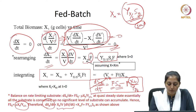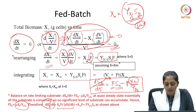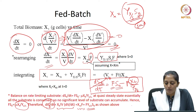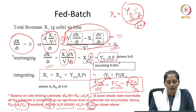At quasi-steady state all the substrate is getting consumed, so there is no significant level of substrate which can get accumulated. In that case your f·s₀ goes to 0, and f·s₀ becomes equal to μ·xt / (yx/s). So if f·s₀ equals μ·xt/(yx/s), then dxt/dt can be written as xt/v × dv/dt. Multiplying and dividing, this becomes xm × f, where f multiplied by xm equals yx/s multiplied by s₀.